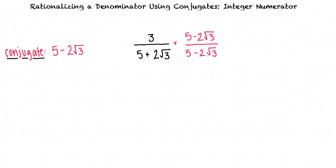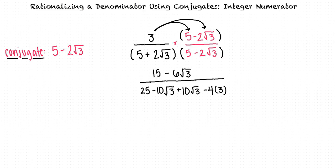Exactly. When we do this, we can distribute the numerator and multiply the denominators. Once we've simplified our expression, we see that our final answer is (15 - 6√3)/13.